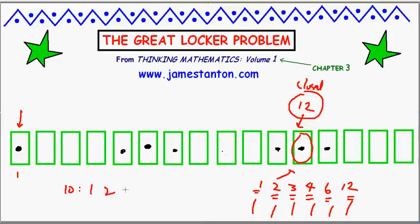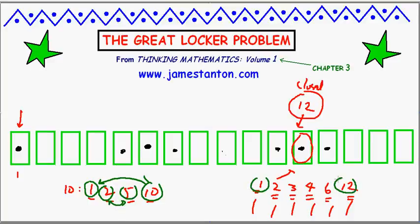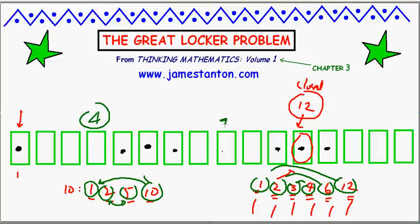Locker number 10 has factors 1, 2, 5, and 10 — it will be touched four times. A curious fact about factors is they always come in pairs: 1 and 10, 2 and 5. Back to 12: 1 and 12 is a pair, 2 and 6 is a pair, 3 and 4 is a pair. So it looks like all numbers have an even number of factors, meaning we'd expect all lockers to be touched an even number of times and therefore all to be closed. Except we didn't see that — lockers number 4, 9, 16, and 25 all seemed to be touched an odd number of times and are therefore left open.